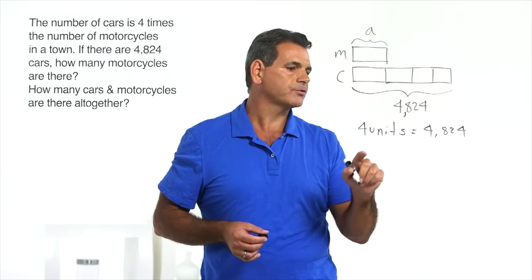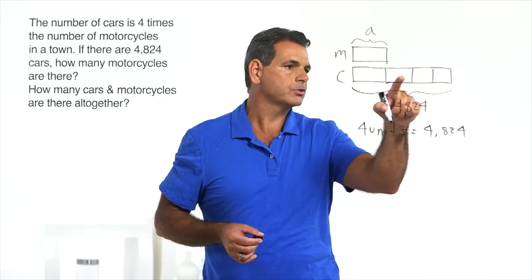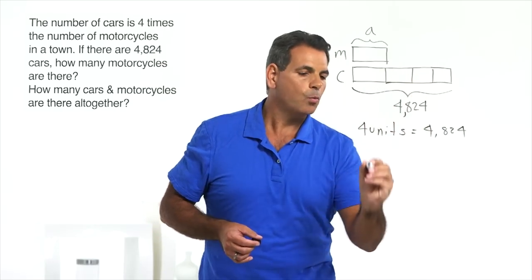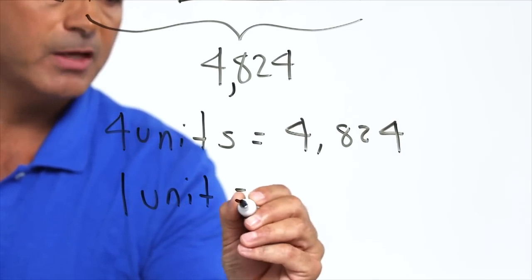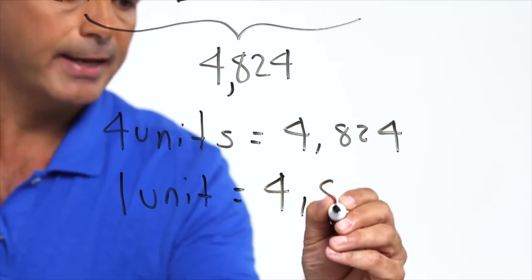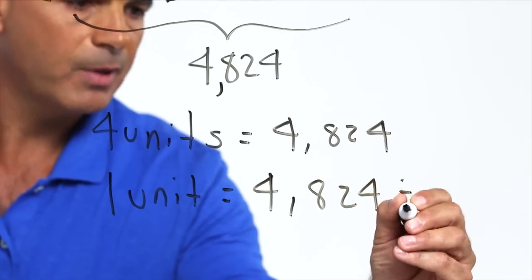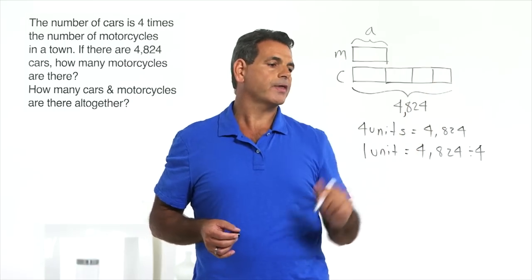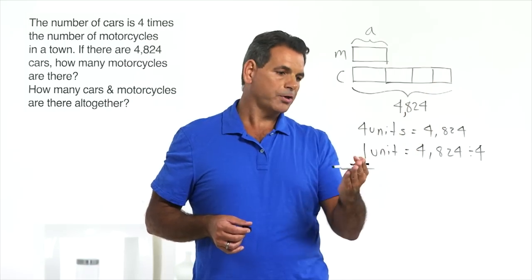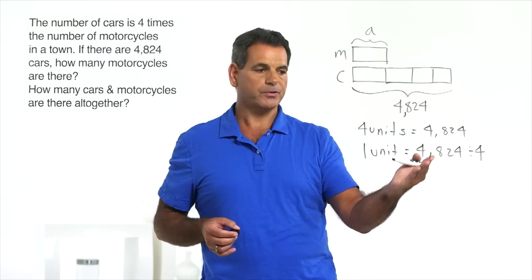Four units is 4,824. One, two, three, four. One unit equals 4,824 divided by 4.